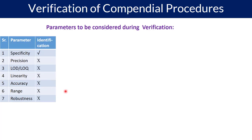Let us talk about the first test type: identification — for example, identification by TLC or FTIR. If you are using the same compendial procedure, you do not need to conduct all the validation parameters. For identification, even during full validation only specificity is required, and therefore specificity is the recommended parameter for the verification activity as well.